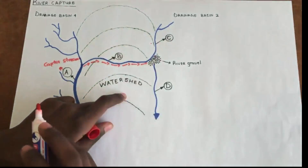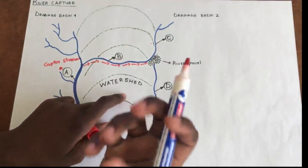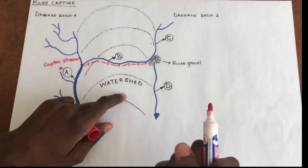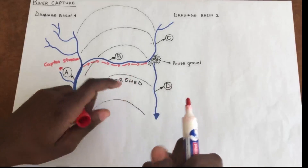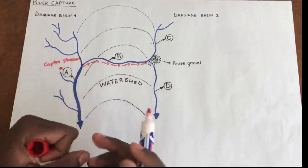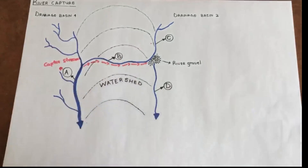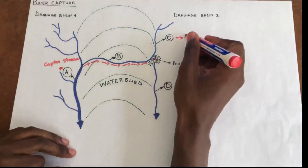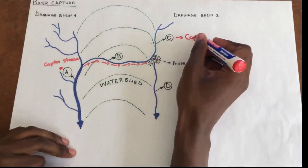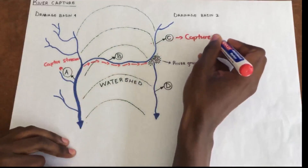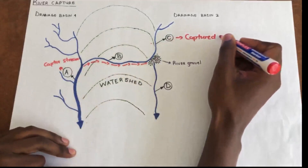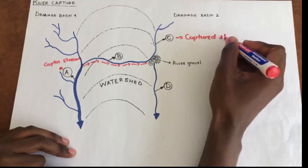What is river C? River C is the stream that has been captured — the river whose water is being stolen by river A. So river C becomes a captured stream, also called a beheaded stream or a dropped stream.